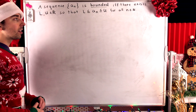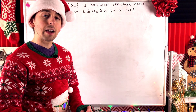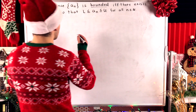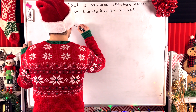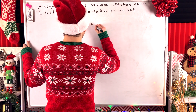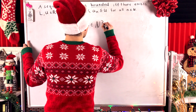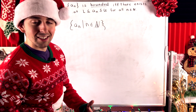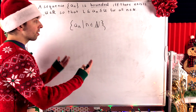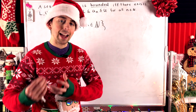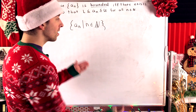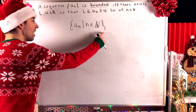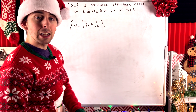To define what it means for a sequence to be bounded, we basically just reduce it to the definition of a bounded set. We say a sequence aₙ is bounded if and only if the set of values that the sequence takes on — the set of terms of the sequence — is bounded. Thinking of sequences as functions from the natural numbers to the real numbers, this is the range of the sequence, so the sequence is bounded if the range of values it takes on is bounded as well.